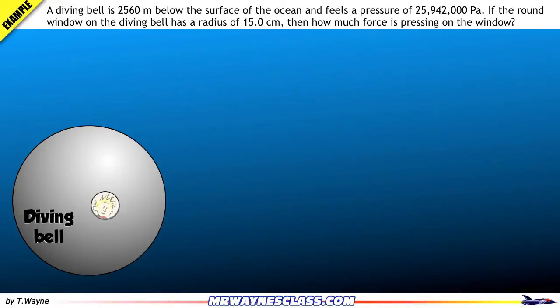This is the video example solution to the pressure problem. A diving bell is 2,560 meters below the surface of the ocean and feels a pressure of 25,942,000 pascals. If the round window in the diving bell has a radius of 15 centimeters, then how much force is pressing on the window?